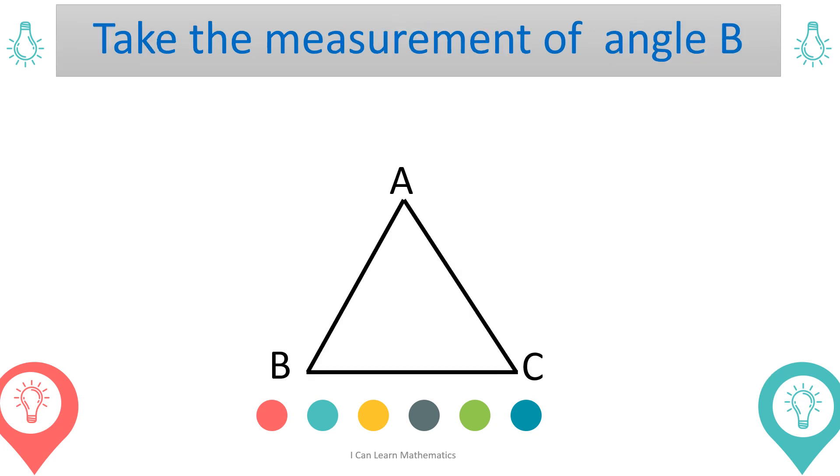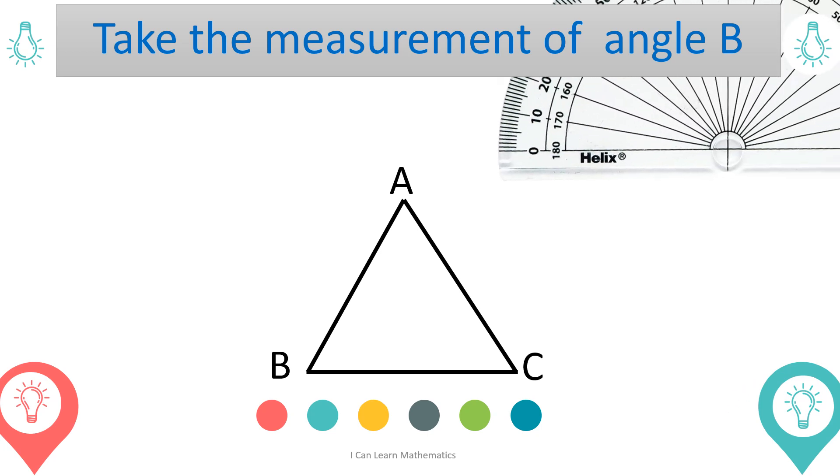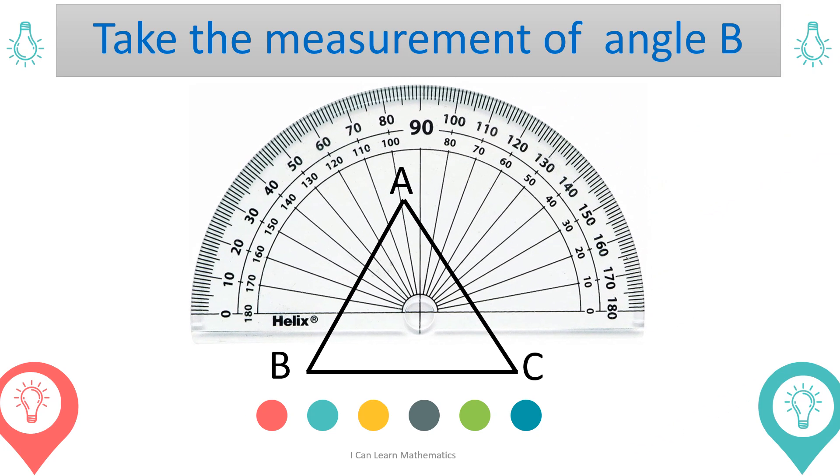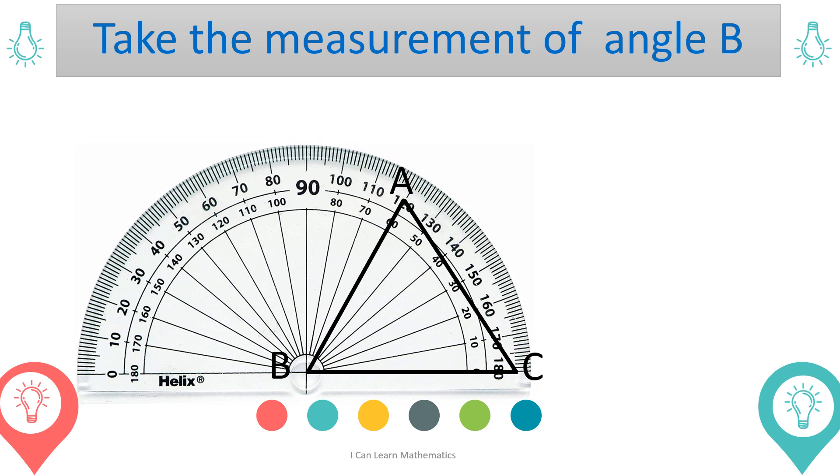Take the measurement of angle B using a protractor. The measurement of angle B is 60 degrees.